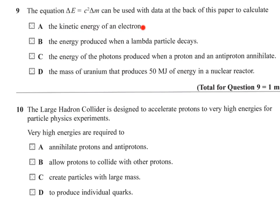Well, the kinetic energy of an electron would depend on the situation. The energy produced when a lambda particle decays would require us to know the mass of a lambda particle. The energy of photons produced when a proton and antiproton annihilate. Well, we could get that from the mass of a proton and then use it twice to get the annihilation of one with another. And the mass of uranium that produces 50 megajoules of that. Well, again, that would need us to know the exact masses involved in that particular situation. So the only one that we could really get would be this one here.